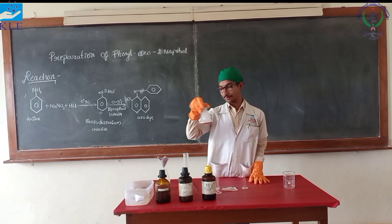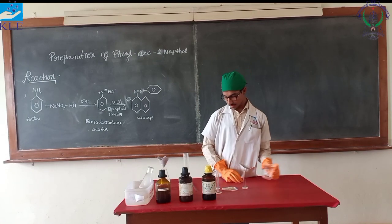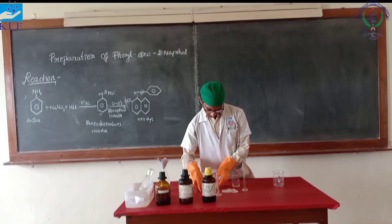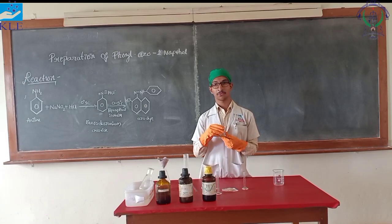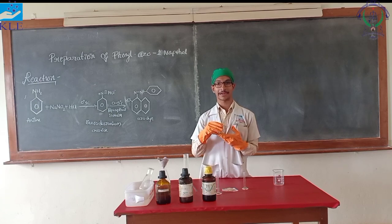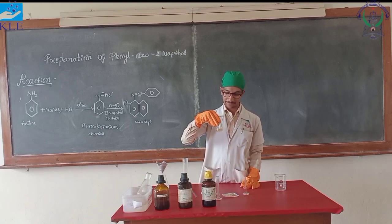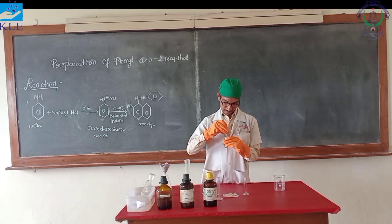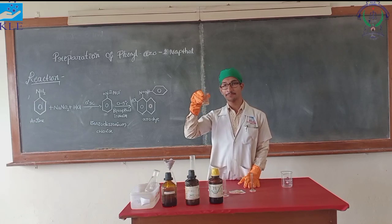Keep it on ice bath. Take a weighed quantity of 4 grams of sodium nitrite (NaNO₂) and dissolve it with a little quantity of water — here I am taking 10 ml of distilled water. Stir it with the help of a glass rod to completely dissolve the sodium nitrite. As it completely dissolves, keep it also in the ice bath.